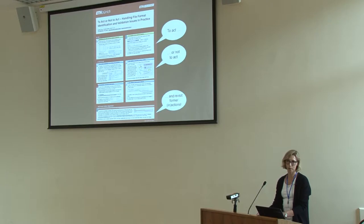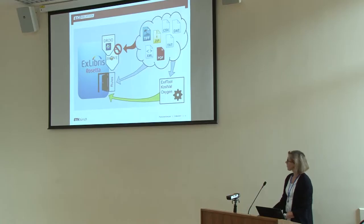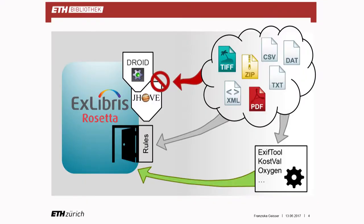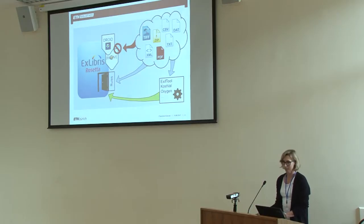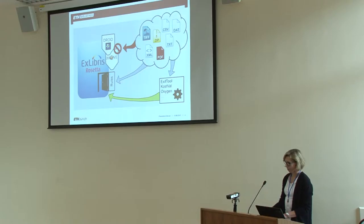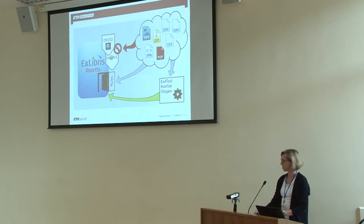I may not be able to address all of them or come up with final answers. This illustration is an attempt to show the situation we have in a Rosetta environment. Here's my flock of file formats, by no means exhaustive. Droid and Jove are kind of gatekeepers preventing invalid files from entering the system. Rosetta rules and validation stack rules can open a door, or pre-ingest analysis helps to clear the entrance. We can run files through other validation or correction tools to avoid technical analyst issues in Rosetta.